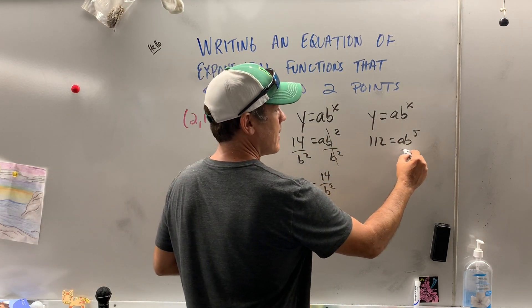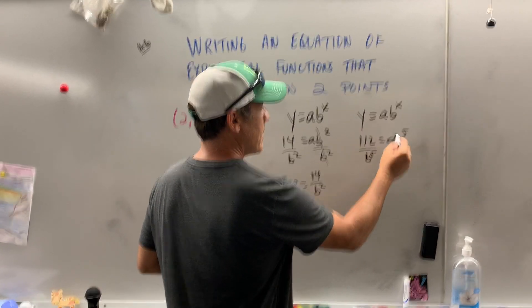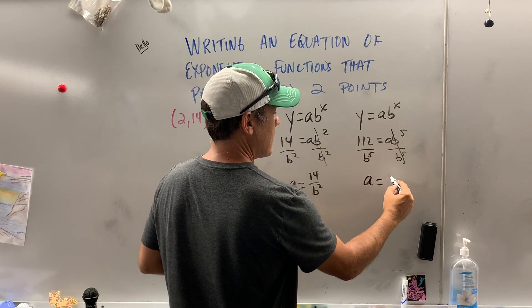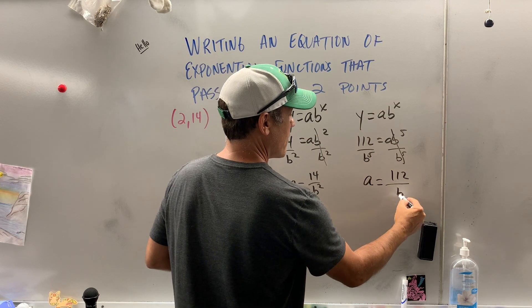Over here, to solve for a, I divide by b to the fifth. That cancels, so I'm left with a equals 112 over b to the fifth.